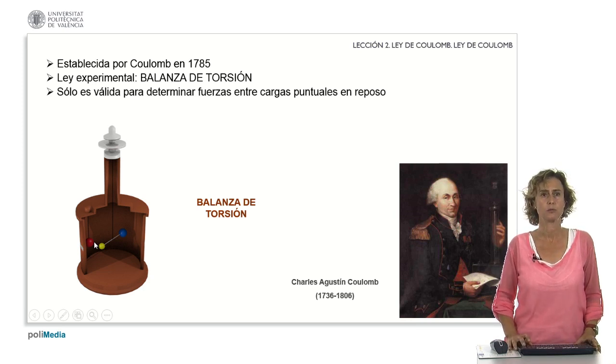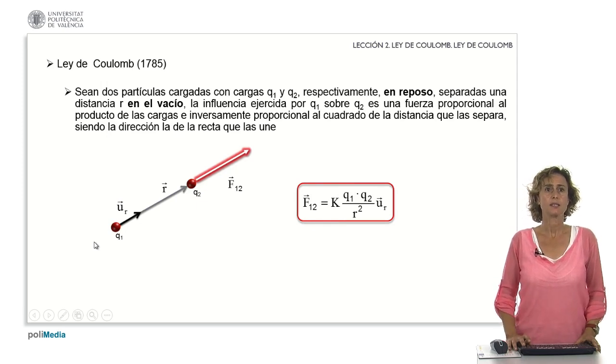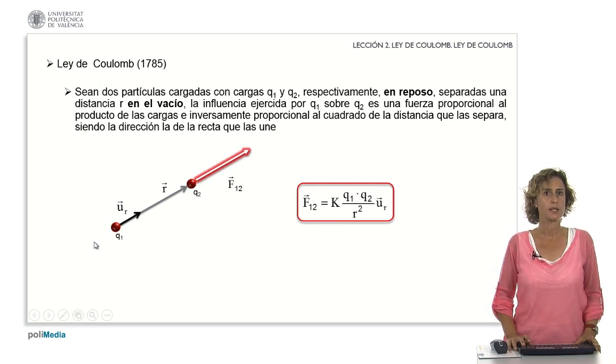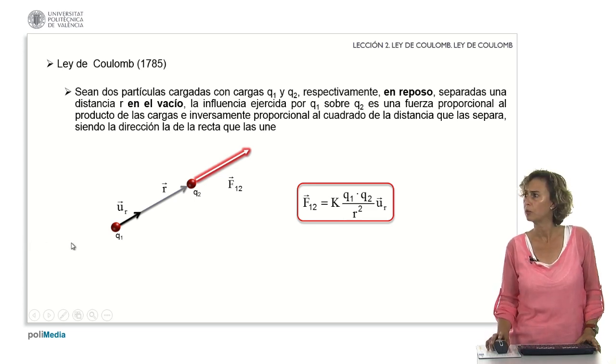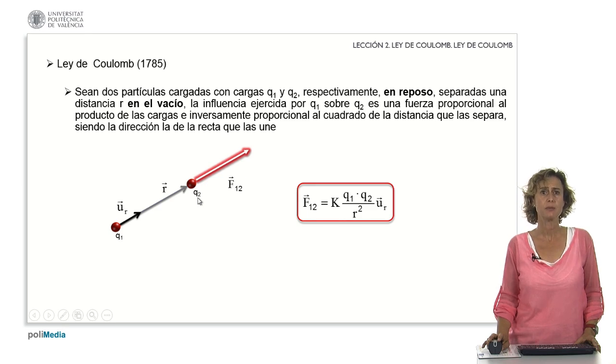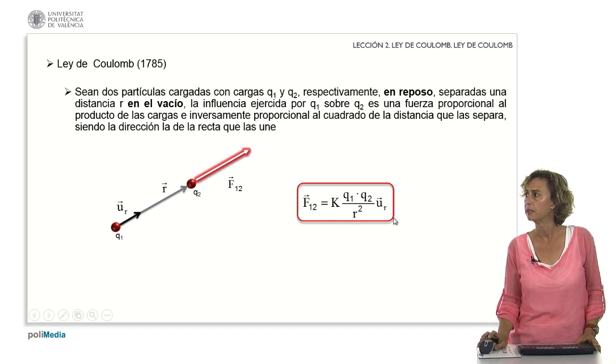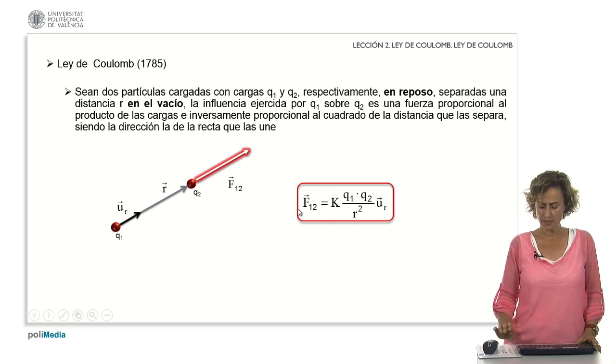This law tells us that if we have two charged particles with charges Q sub 1 and Q sub 2, respectively, being at rest and separated by a distance r in a vacuum, the influence exerted by Q sub 1 on Q sub 2 is a force proportional to the product of the charges and inversely proportional to the square of the distance that separates them, the direction being that of the straight line that joins them. Mathematically, this law can be expressed in this way.